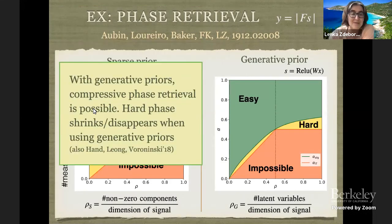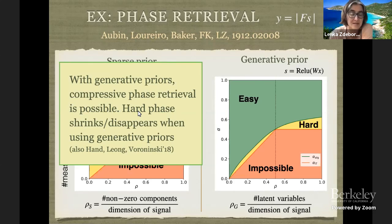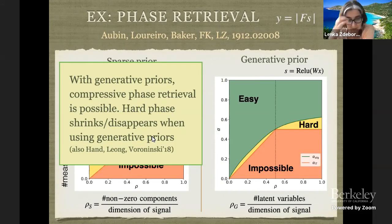The fact that the green curve goes to zero — that it doesn't saturate at any finite alpha — means that if I use a generative prior I can take advantage of the compression also algorithmically. I don't have the same trouble as with sparsity. The hard phase shrinks or disappears when using generative priors, which we've seen in our work and also appeared in a paper three years ago from the RIPS.